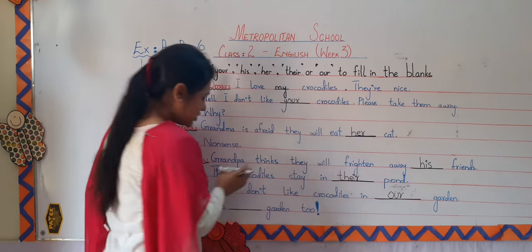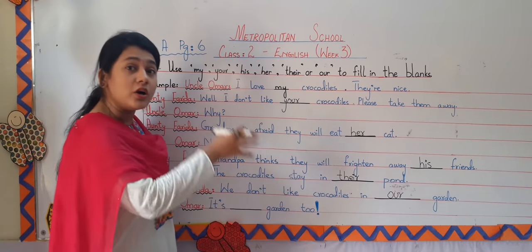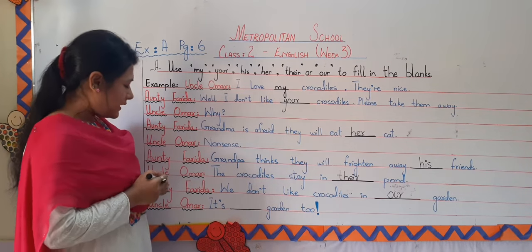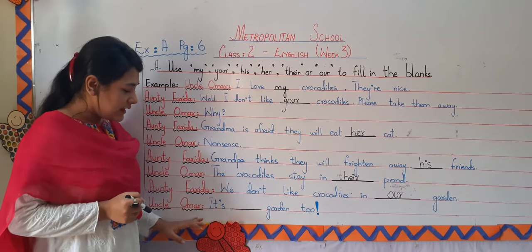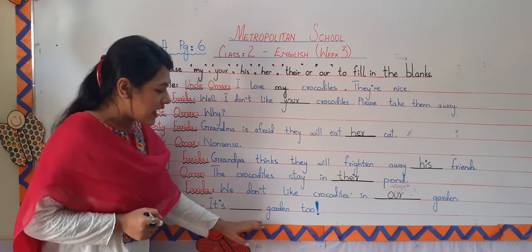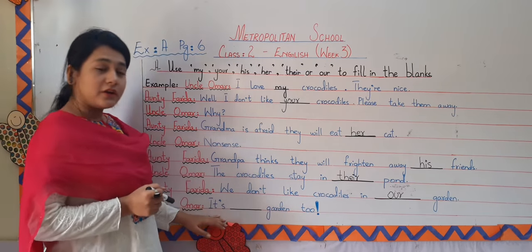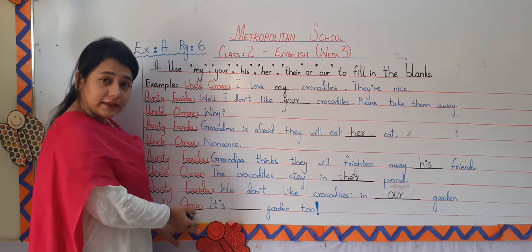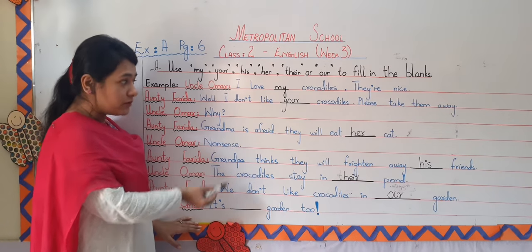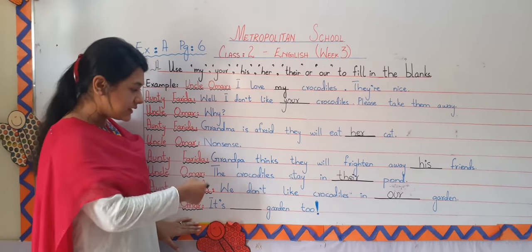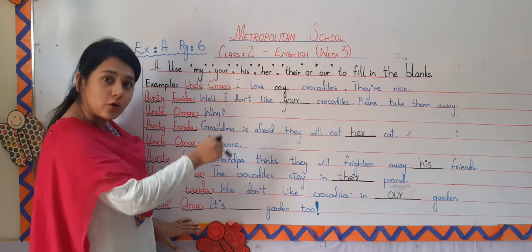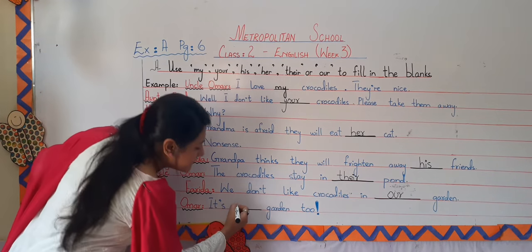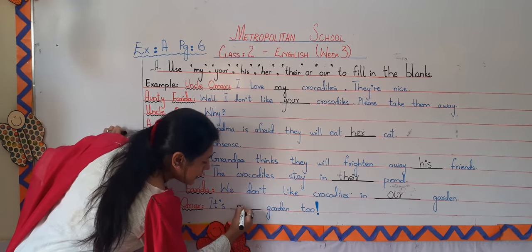Because she is talking about her garden. Then in the last, Uncle Umar said, 'It's dash garden too.' Because here Uncle Umar is saying that the garden belongs to him too, since he lives in that home as well. So he said, 'It's my garden too.'